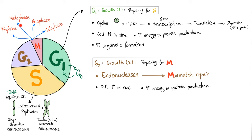M is divided into pro-meta-anatello. So, G1 is the growth, and this is preparing for the S. Let's talk about the G1. We start with cyclins. We stimulate them, and then they become cyclin D kinases. And then, transcription, translation, we end up with proteins, such as the enzymes. The cell grows in size. That's why we call it growth. Increase energy and protein production. And increase organelle formation. That's why we call it growth. So, this is the G1.